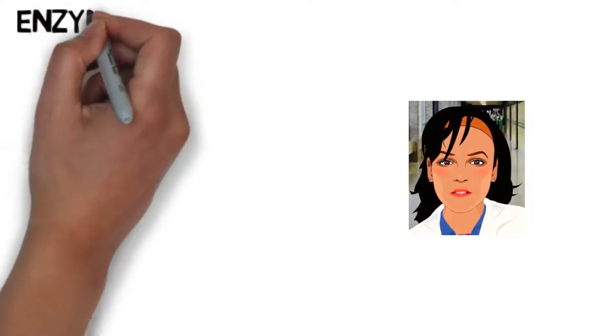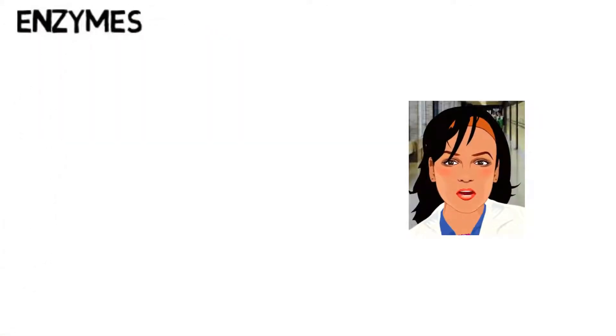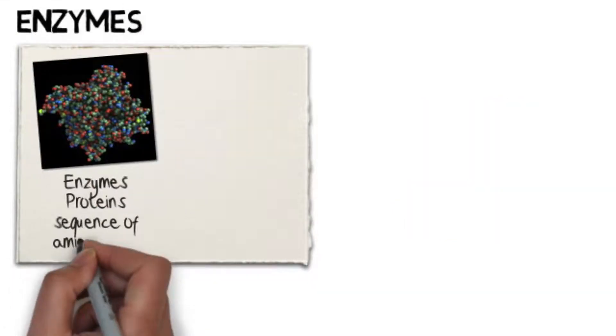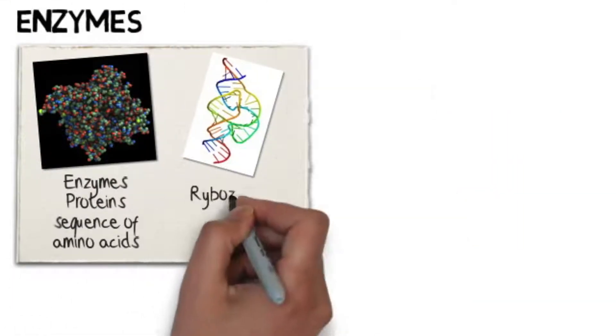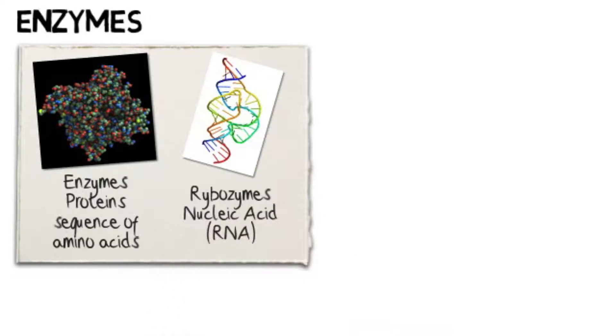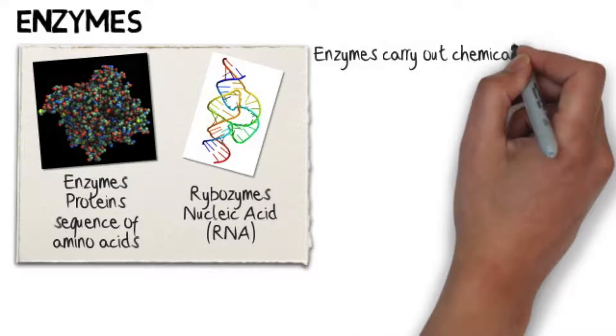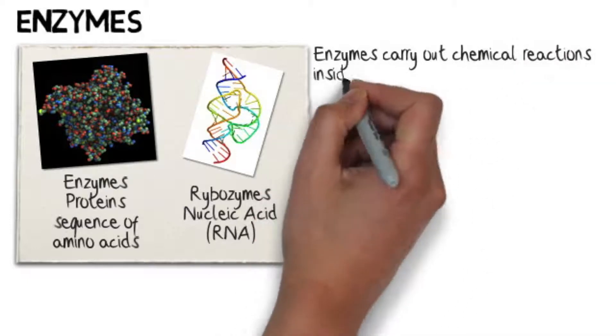To understand metabolism, we must first understand enzymes. Except for ribozymes, all enzymes are proteins, which means they are sequences of amino acids. What makes enzymes special among proteins is that enzymes can carry out chemical reactions inside the cell.